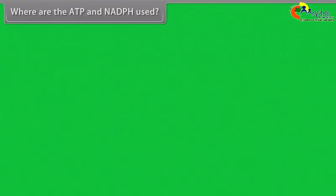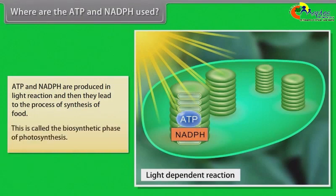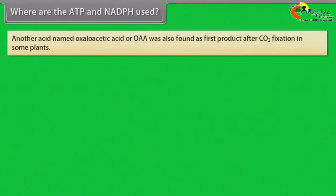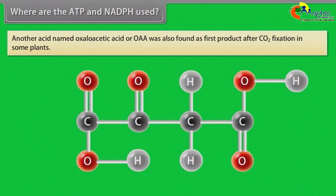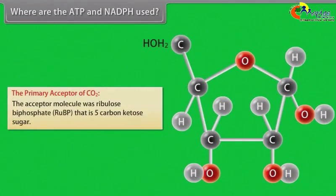Where are ATP and NADPH used? ATP and NADPH produced in light reaction lead to the process of synthesis of food. This is called the biosynthetic phase of photosynthesis. Melvin Calvin's study led to the discovery that the first product after carbon dioxide fixation... The primary acceptor of CO2 was ribulose bisphosphate (RuBP), that is, a 5-carbon ketose sugar.